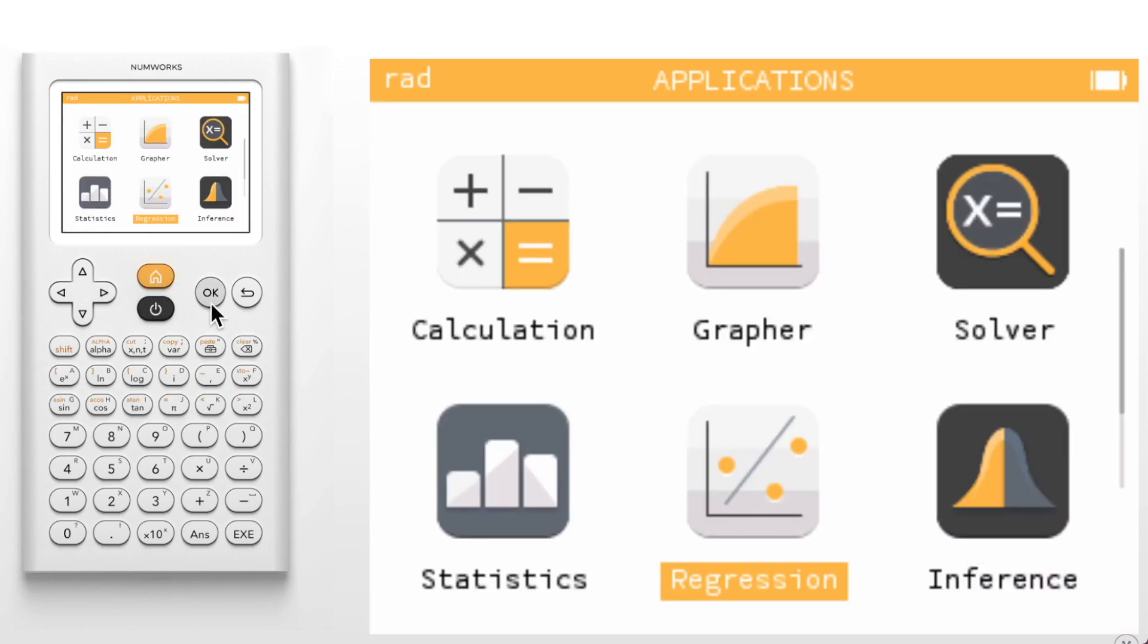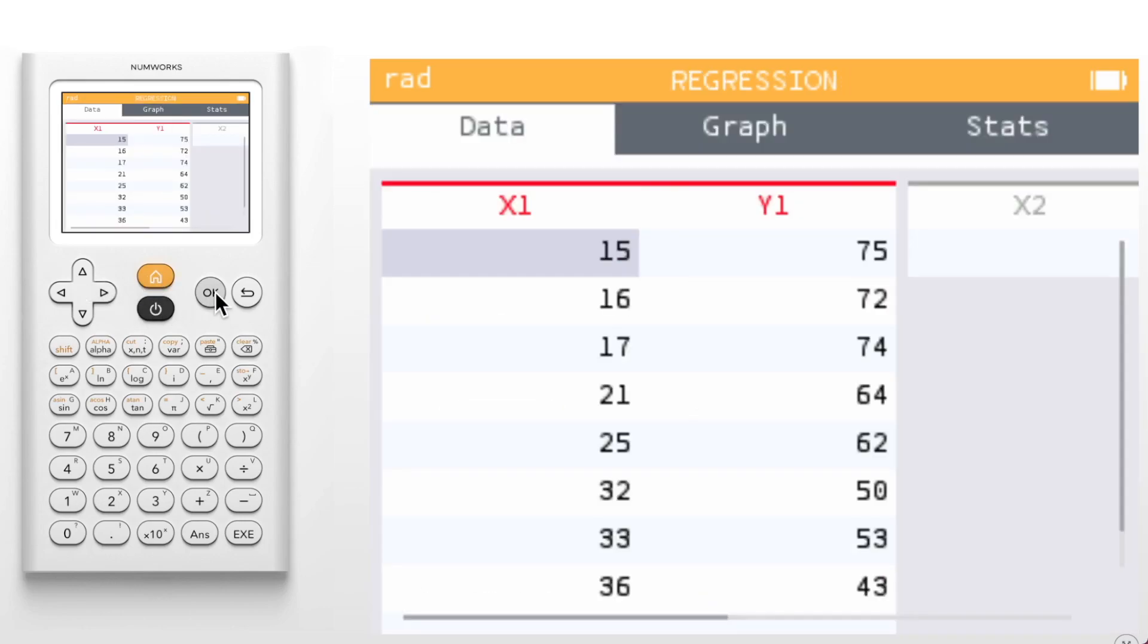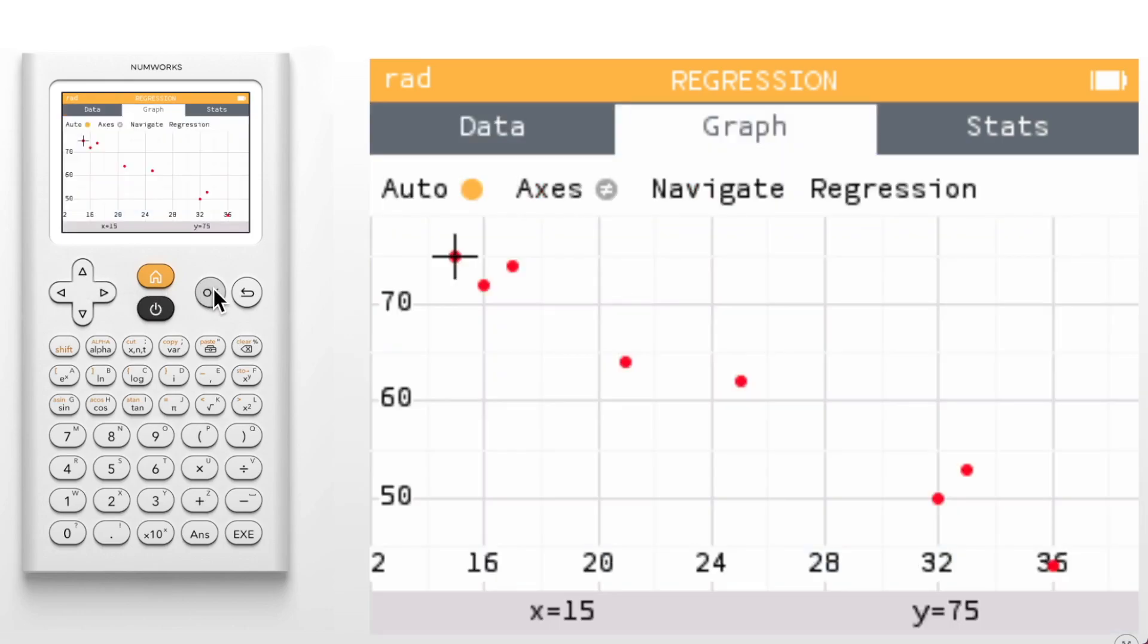Moving on to the regression application. As a reminder, the regression application is great for two variable data sets. Similar to the statistics app, you'll notice that there are three tabs at the top when you first open the application. In the data tab, I have already entered a data set. The regression application has been revised so that when you go to the graph tab, the first thing that is displayed is a scatter plot.